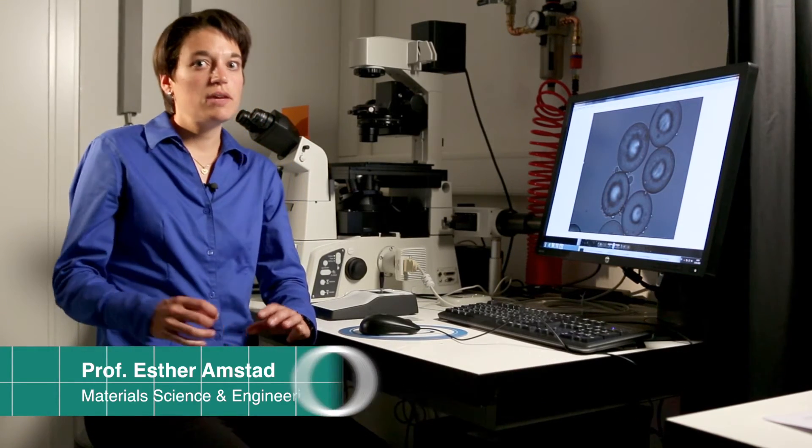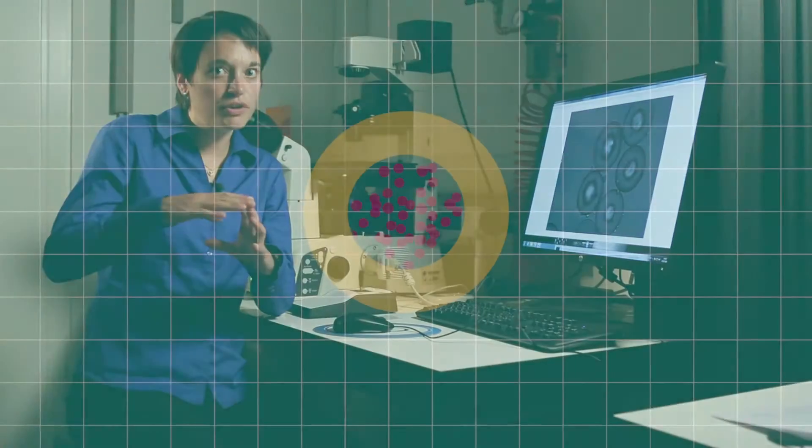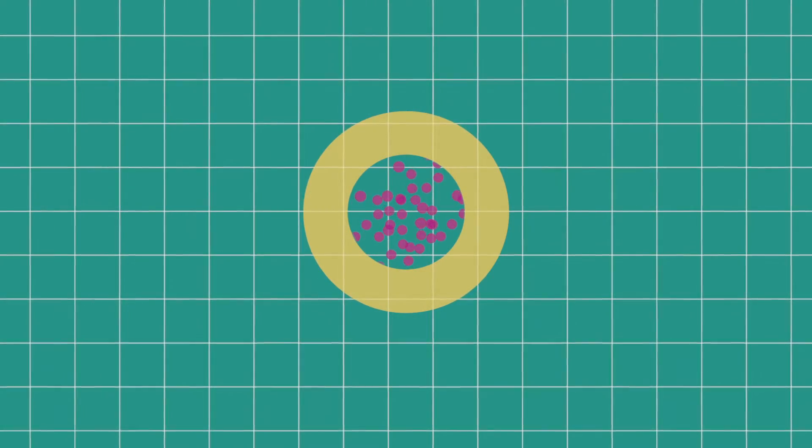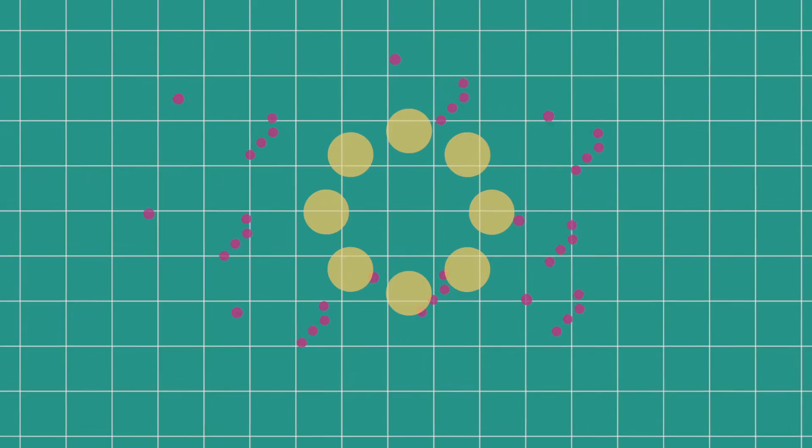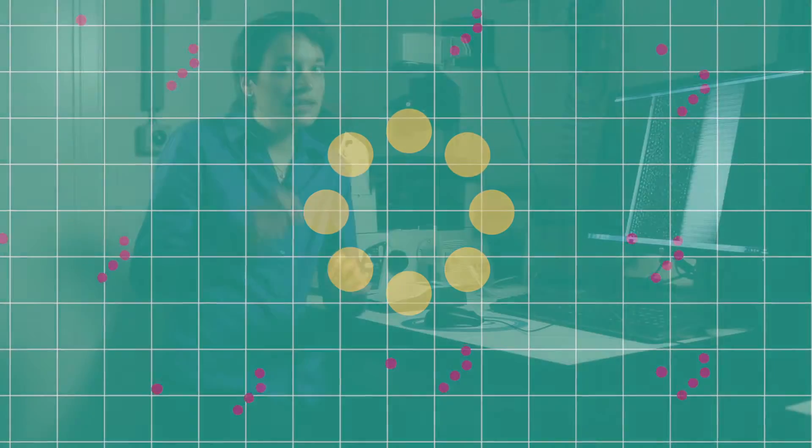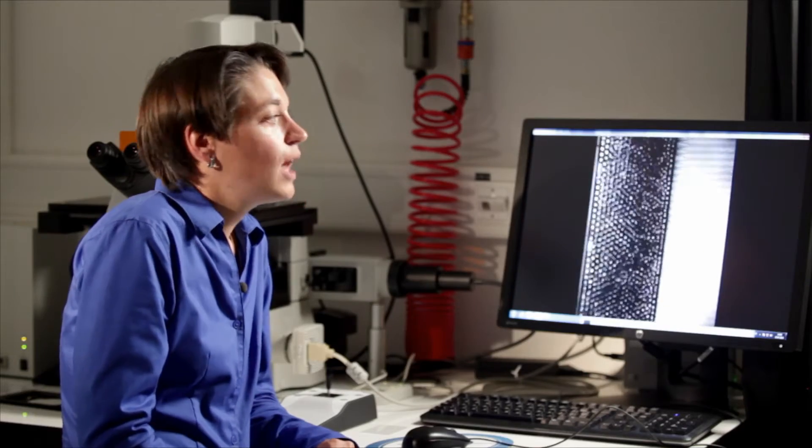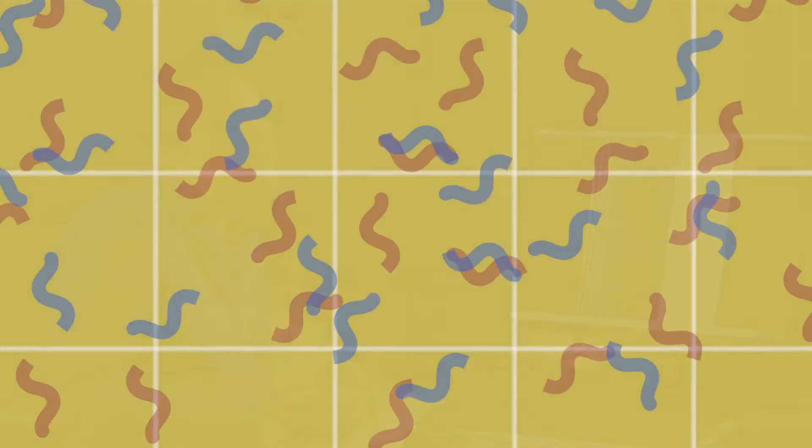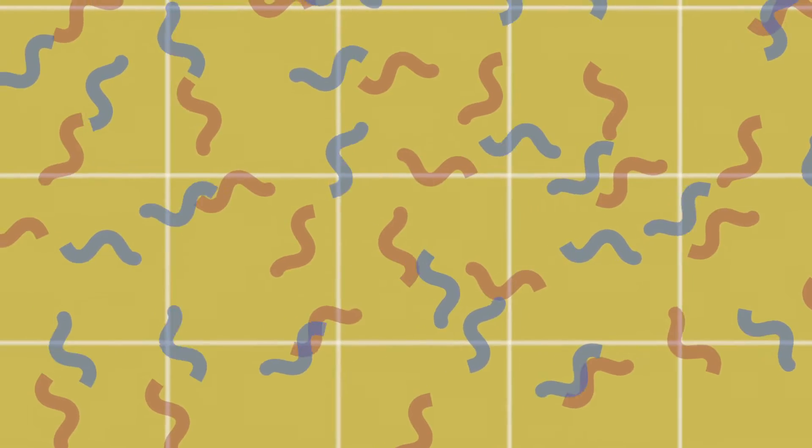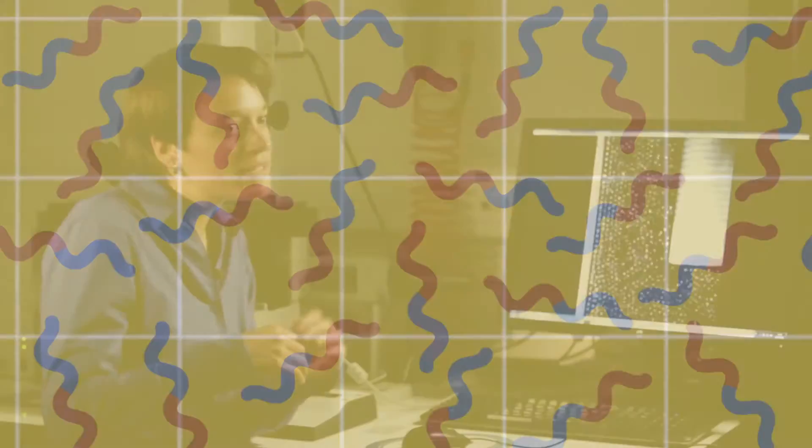Almost like a cage where you can put in something, you close the door and once you need it you can open the door and release it again. These capsules have very small thin shells that are roughly 10,000 times smaller than a human hair. And we build these shells from tiny molecules that we assemble, almost like Lego.